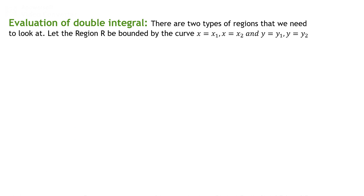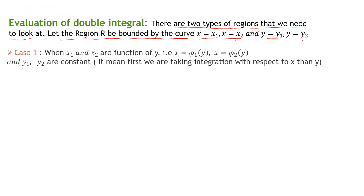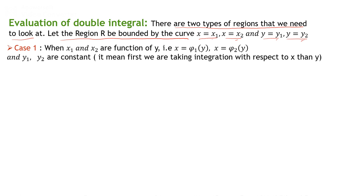There are two types of regions to consider. Let region R be bounded by x = x₁, x = x₂, y = y₁, and y = y₂, where these may be functions. Case 1: when x₁ and x₂ are functions of y — say x = φ₁(y) and x = φ₂(y) — and the limits y₁ and y₂ are constant. In this case we first integrate with respect to x, then with respect to y.